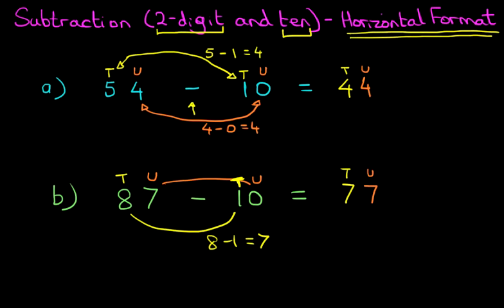And again, the units have not changed, but the tens have gone down by 1. 87 minus 10 is 77. It really is that simple. And that is how we subtract a two-digit number and the number 10 using the horizontal format.